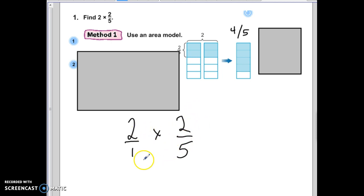Now, you multiply across. 2 times 2 equals 4. 1 times 5 equals 5. Since we can't reduce any further, our answer is simply 4 fifths.